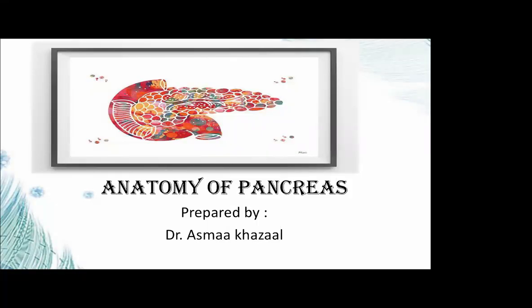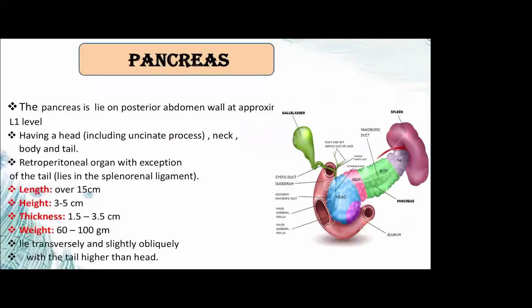The pancreas lies on the posterior abdominal wall at approximately L1 level. It has a head and uncinate process, neck, body, and tail. It lies transversely and slightly oblique, with the tail higher than the head.